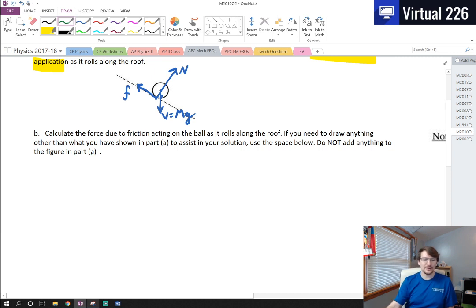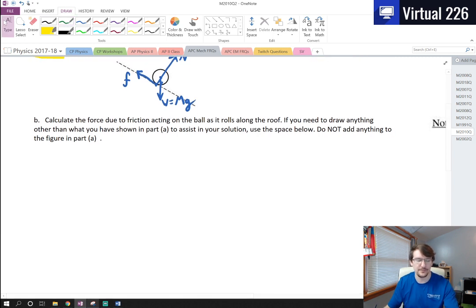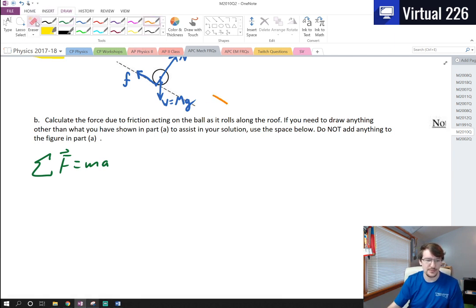For Part B, we are asked to calculate the force due to friction acting on the ball as it rolls along the roof. If we need to draw anything new, we'll draw it down below. Don't muddle up Part A. What we need to do is we need two equations here. We need the classic equation, Newton's Second Law, F equals MA. Let's take going down the plane to be positive and going up the plane to be negative.